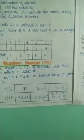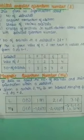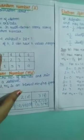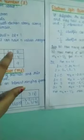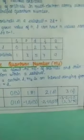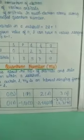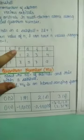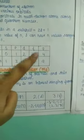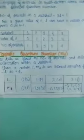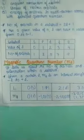The number of values of l goes from 0 to n-1. The subshells are S, P, D, F, G. The value of l for S is 0, for P is 1, for D is 2, for F is 3, and for G is 4.